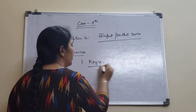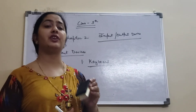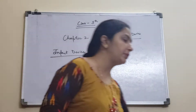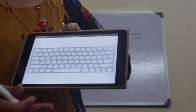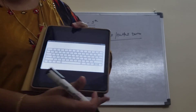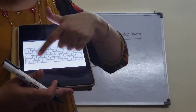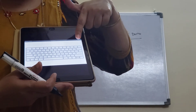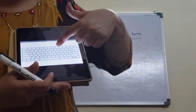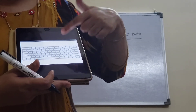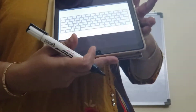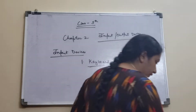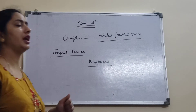Today we are going to discuss some input devices of the computer. The first one is the keyboard. This is the first input device which everyone needs when they are entering data into the computer. You can see this keyboard. There are different kinds of keys: these are the function keys, then we have alphanumeric keys — alphabets here and numbers here — then arrow keys, which are called navigation keys, and a numeric pad for typing numbers.